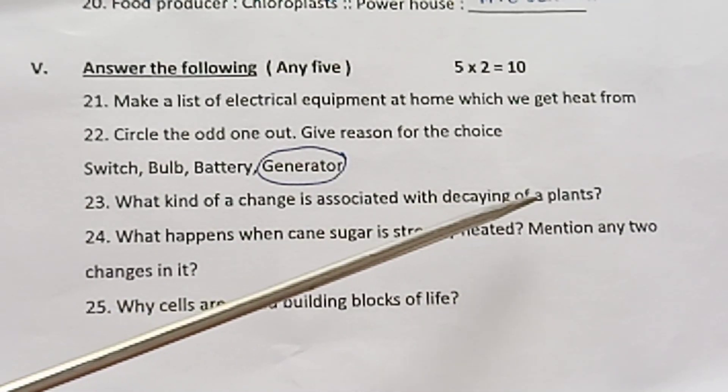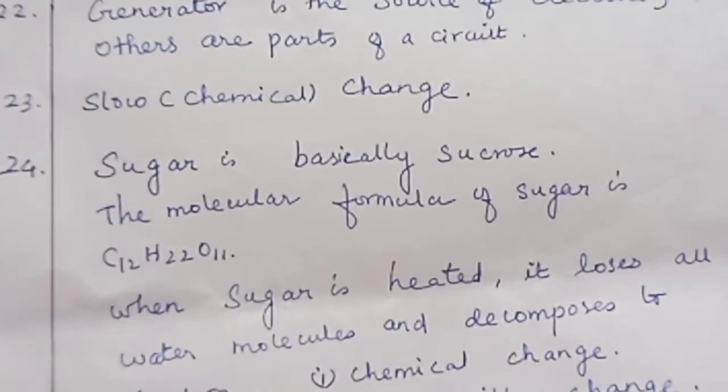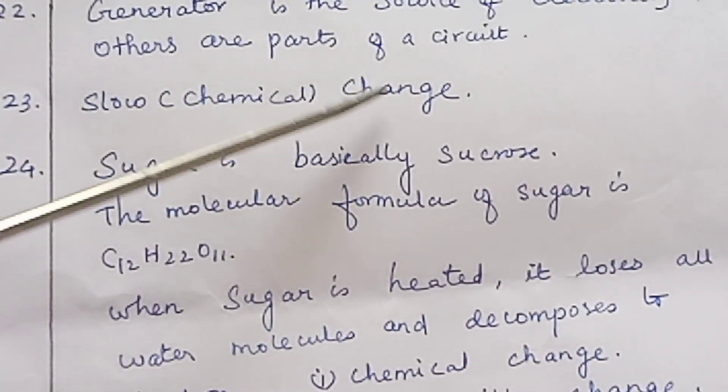Question 23: What kind of change is associated with the decaying of a plant? Answer: Slow change.